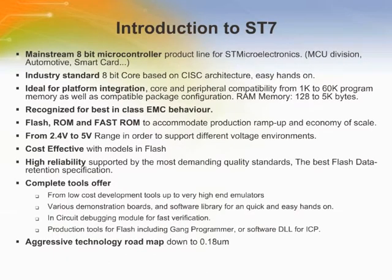The ST7 has a CISC architecture with up to 60 kilobytes of program memory and a voltage range of 2.4 to 5 volts. The ST7 is based on a von Neumann architecture; that is, there is only one address space in which program, data, and input-output peripherals are mapped.